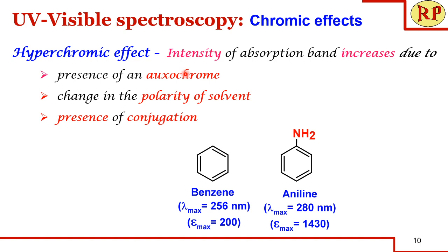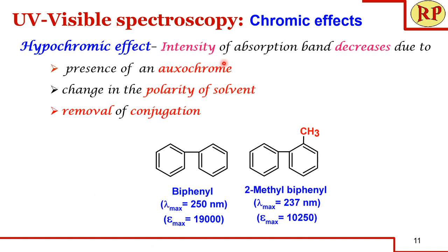The hyperchromic effect is an increase in the intensity of the absorption band. It can be due to the presence of an oxochrome, a change in the polarity of the solvent, or the presence of conjugation — the same factors that affect bathochromic shift. Using the same example, the epsilon-max value increases from 200 to 1430. The hypochromic effect is a decrease in the intensity of the absorption band, due to the presence of an oxochrome, change in solvent polarity, or removal of conjugation, as seen in our biphenyl example where epsilon-max decreases from 19,000 to 10,250.